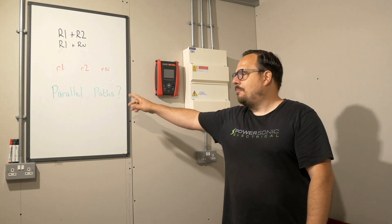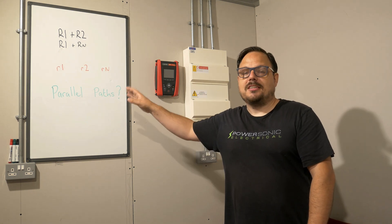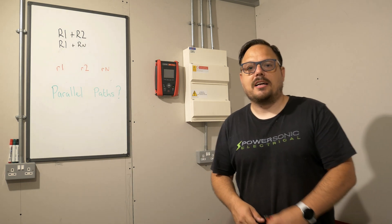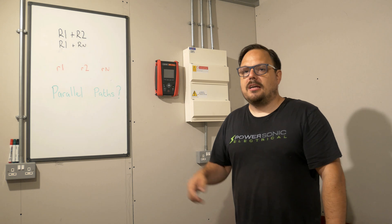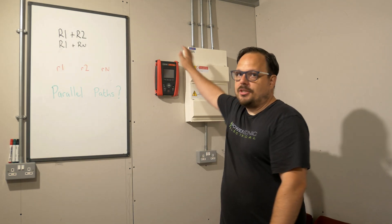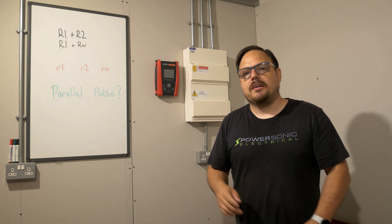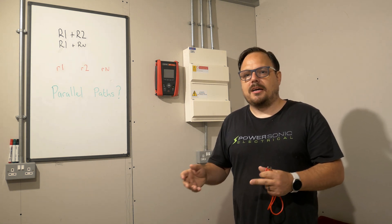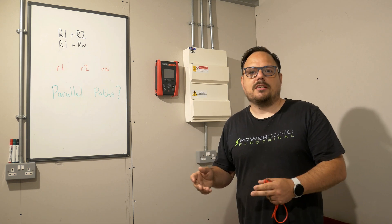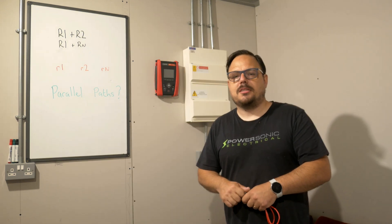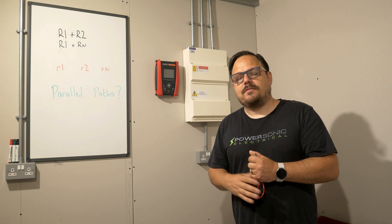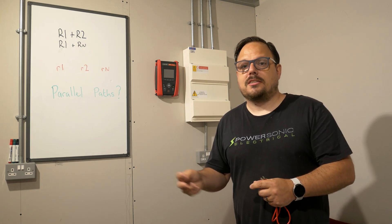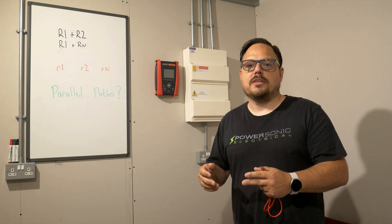You can see I've put a big note on the board that says 'parallel paths'. These sockets are metal clad in metal conduit and that conduit terminates into the distribution board behind me. So you are never going to be able to remove all of the earth parallel paths within an installation when metallic containment is in use. It is very difficult, so you need to be aware as the person carrying out the test how that can impact on your results.